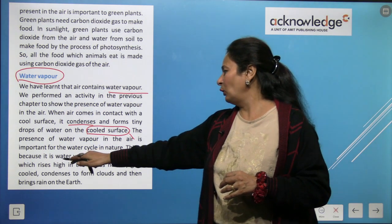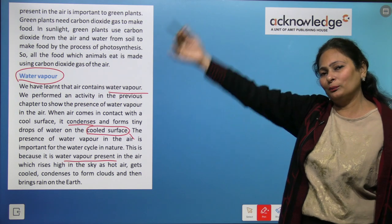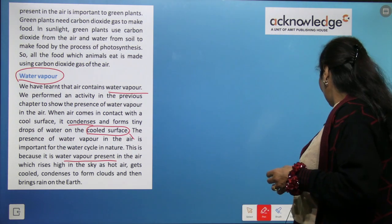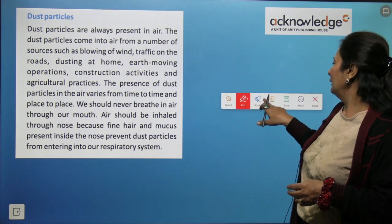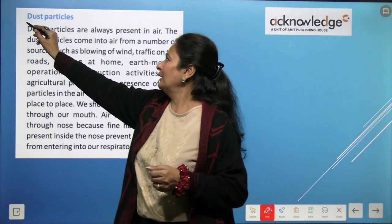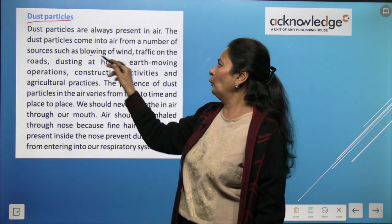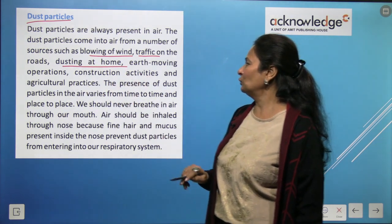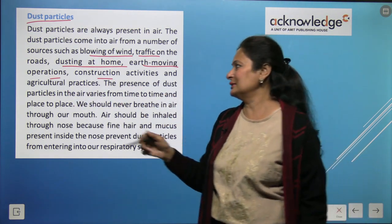The presence of water vapor in air is important for the water cycle in nature. Water vapor rises high in the sky, gets cold, forms clouds, and falls as rain. Dust particles are also mixed with air from sources such as blowing wind, traffic, dusting at home, earth-moving operations, and construction activities.